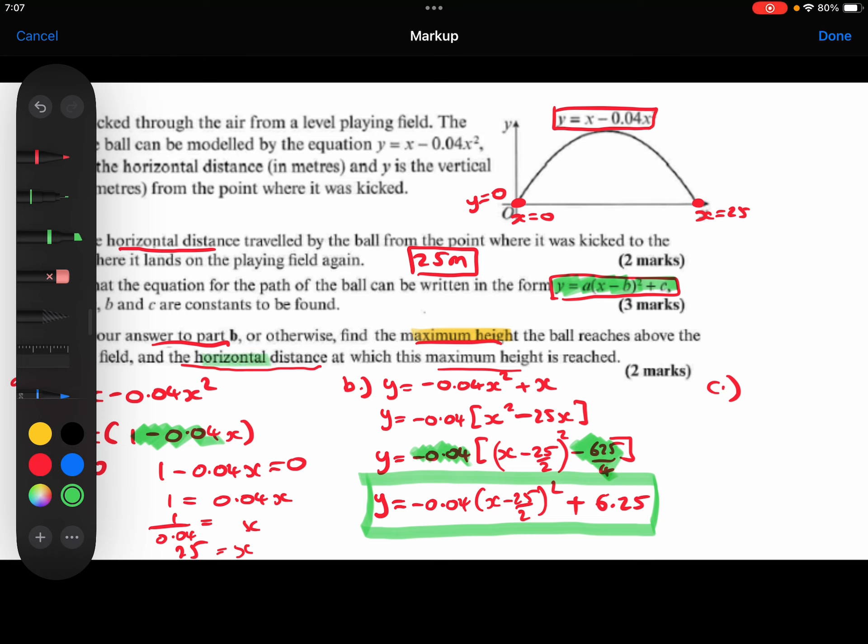So we need to find the maximum height, and the horizontal distance. Well, the maximum height, I know, is going to be the 6.25 meters. And I know that that is going to take place when x is equal to the 25 over 2, or 12.5.